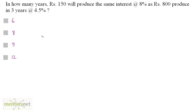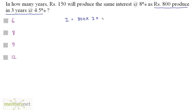In how many years will Rs. 150 produce the same interest at 8% as Rs. 800 produces in 3 years at 4.5%? First, calculate the interest produced by Rs. 800 in 3 years at 4.5%: SI equals 800 times 3 times 4.5 upon 100. The zeros cancel out, giving 8 times 3 times 4.5, which equals Rs. 108.